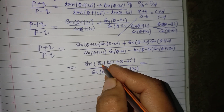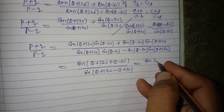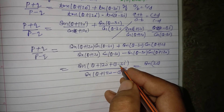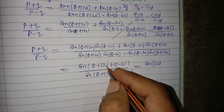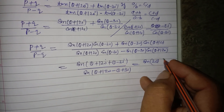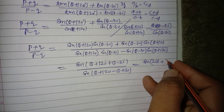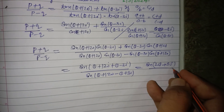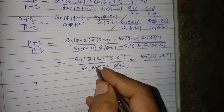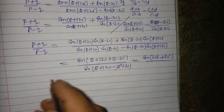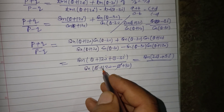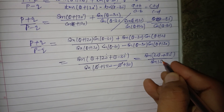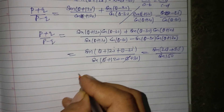Simplifying: the numerator becomes sin(2θ + 90), since θ+θ = 2θ and 120-30 = 90. The denominator becomes sin(120+30) = sin(150), with the θ terms cancelling.